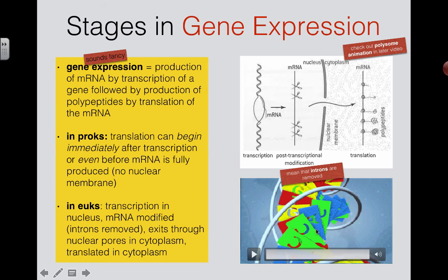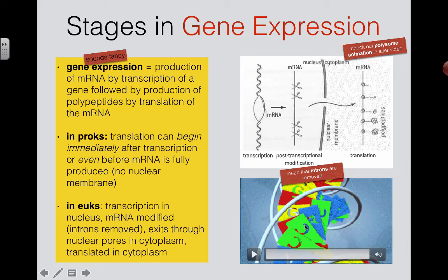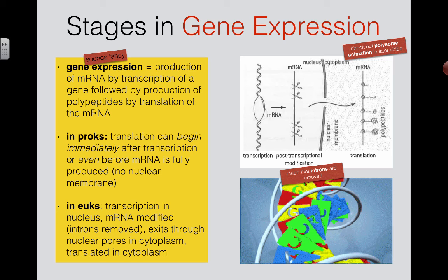There's also a quick animation showing that when you zoom into the nucleus and get down to the gene level, genes are a sequence of bases coding for how to make a protein. Every three letters is called a codon, and each codon codes for an amino acid.